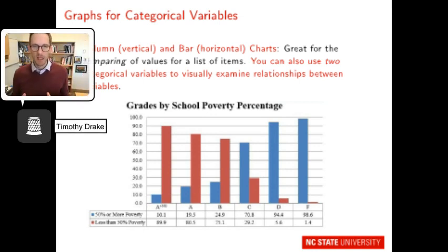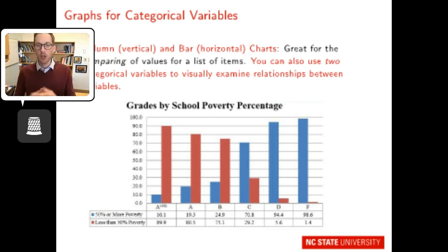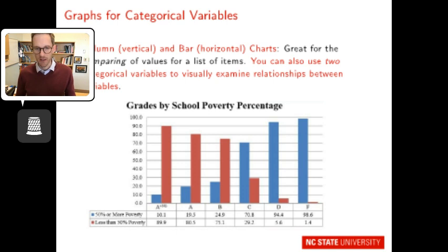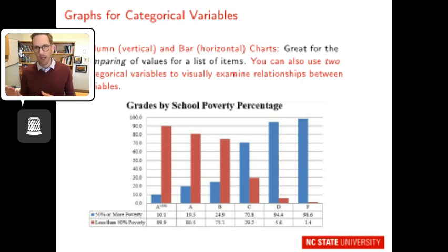Building on that idea, this chart includes two different categorical variables to start examining relationships. In blue, 50% or more of the school is marked as having poverty; in maroon, less than 50% poverty. Looking at school grades, you can see that higher-poverty schools receive an A or higher grade at about 10% compared to 89.9% for lower-poverty schools. Those bars really show and start to suggest a strong relationship between school grade and the percent poverty in our schools.